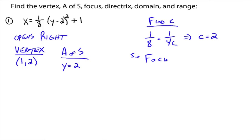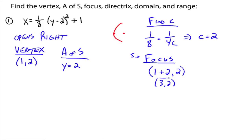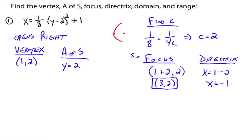So the focus: we're opening to the right, vertex is here, focus is to the right. The x value of the vertex changes, so we have the x value of the vertex plus c: 1 plus 2 equals 3, comma the y value of the vertex which is 2. So the focus is at (3, 2). The directrix, since it's a parabola that opens to the right, is a vertical line: x equals the x part of the vertex minus the c value, so x equals negative 1 is the directrix.